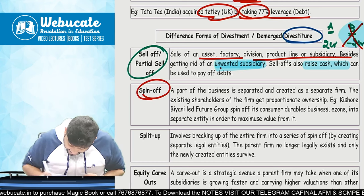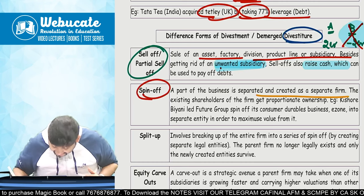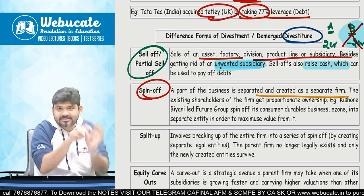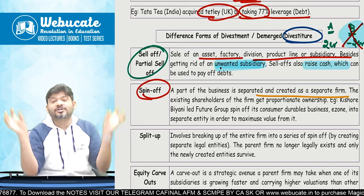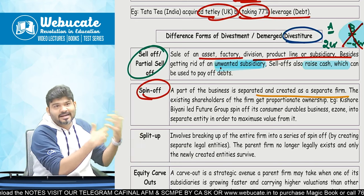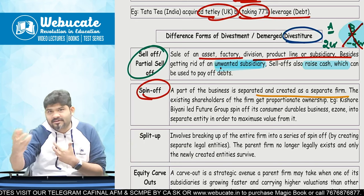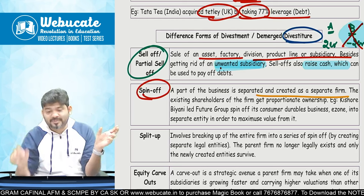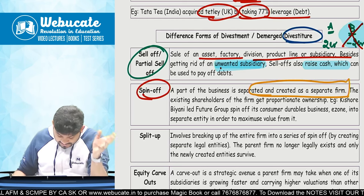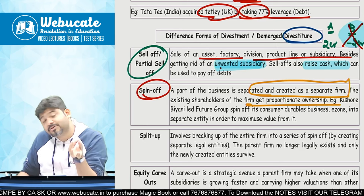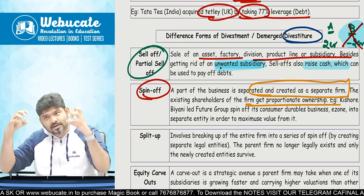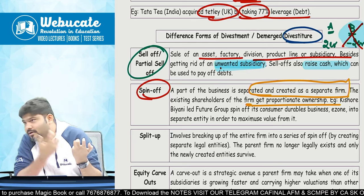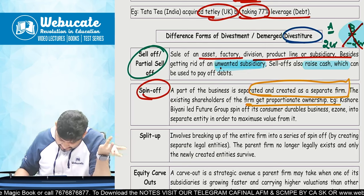Then is spin-off — a part of the business is separated and created as a separate firm. Tata Motors has divided itself into two segments: one is commercial vehicles and the other is consumer vehicles. It has done a spin-off. A part of business is separated and created as a separate firm; existing shareholders get proportionate ownership. If I hold 100 shares of Tata Motors, I will get 100 shares in Tata Commercial and 100 shares in Tata Consumer.